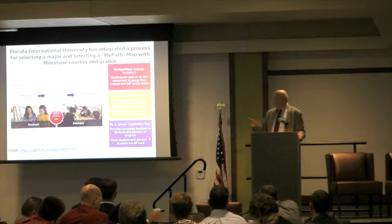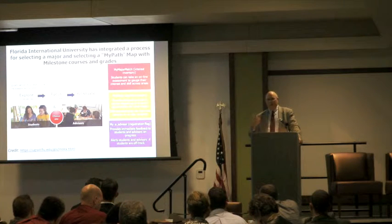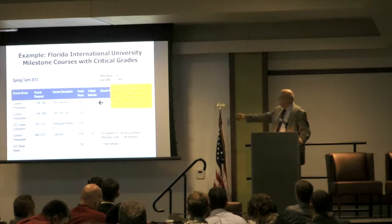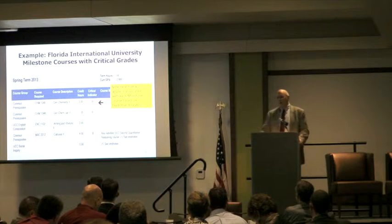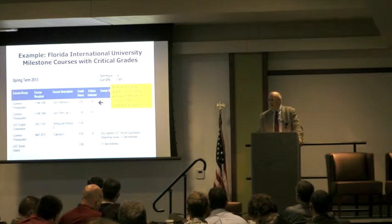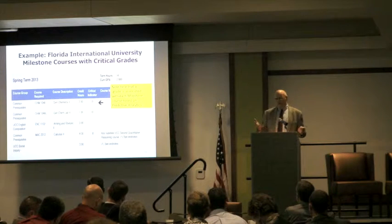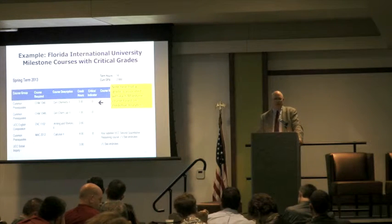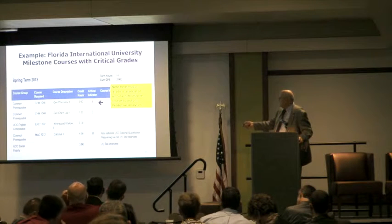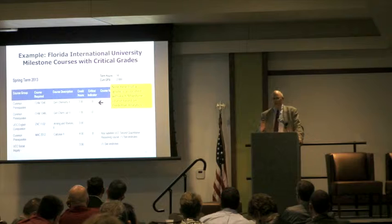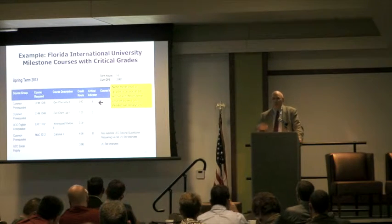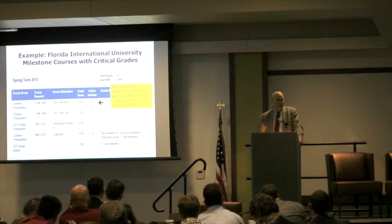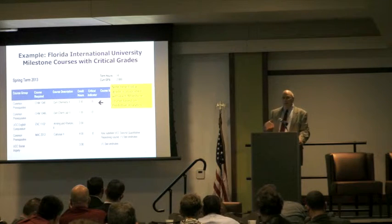Florida International University takes a two-step process. First, using a commercial product, the student goes through an exercise and chooses an area or major. Once they've done that, it bounces them to their schedule. They've also adopted predictive analytics, pioneered by Austin Peay. FIU took every student who graduated in chemistry and found: if a student didn't earn a B in Chem 1046, they had only about a 20% chance of graduating in chemistry. They can tell students upfront that this is a critical course, which helps put some pressure on students to work harder.